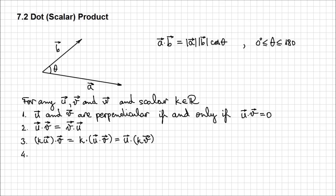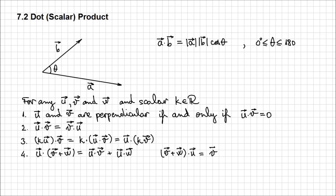The fourth property: the dot product between U and the sum V plus W equals the dot product between U and V, plus the dot product between U and W. This property also works if we have a sum V plus W dot product with U — it's going to be V dot U plus W dot U. This is the distributive property.